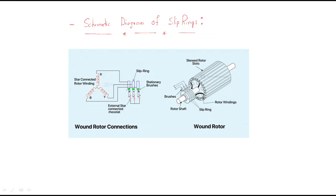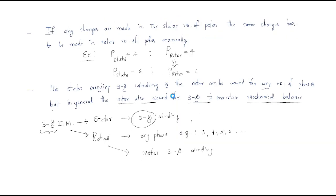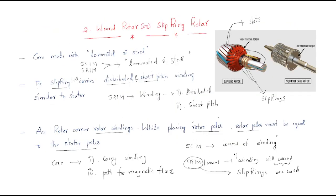These brushes are connected to external resistances. This is the resistor for R, this is for Y, and this is for B. While rotating, the connections rotate but the brushes are stationary, and the external resistance is added to each winding. In this diagram, R phase, Y phase, and B phase are each connected to one slip ring — these are the slip rings.